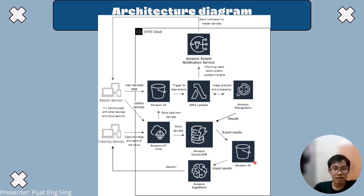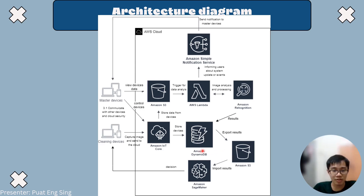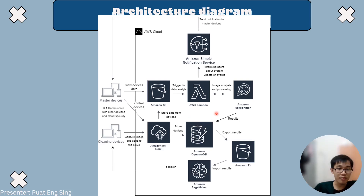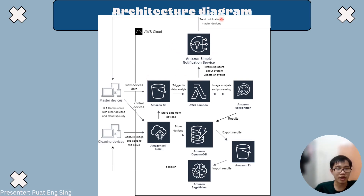The reason for using another S3 bucket here is that SageMaker cannot directly process data from DynamoDB, because direct processing on DynamoDB is very slow. Once we have the results and the decision, Lambda will then notify the user using SNS, sending the analyzed data to SNS to notify the user of the cleaning process. That's all from our architecture diagram.